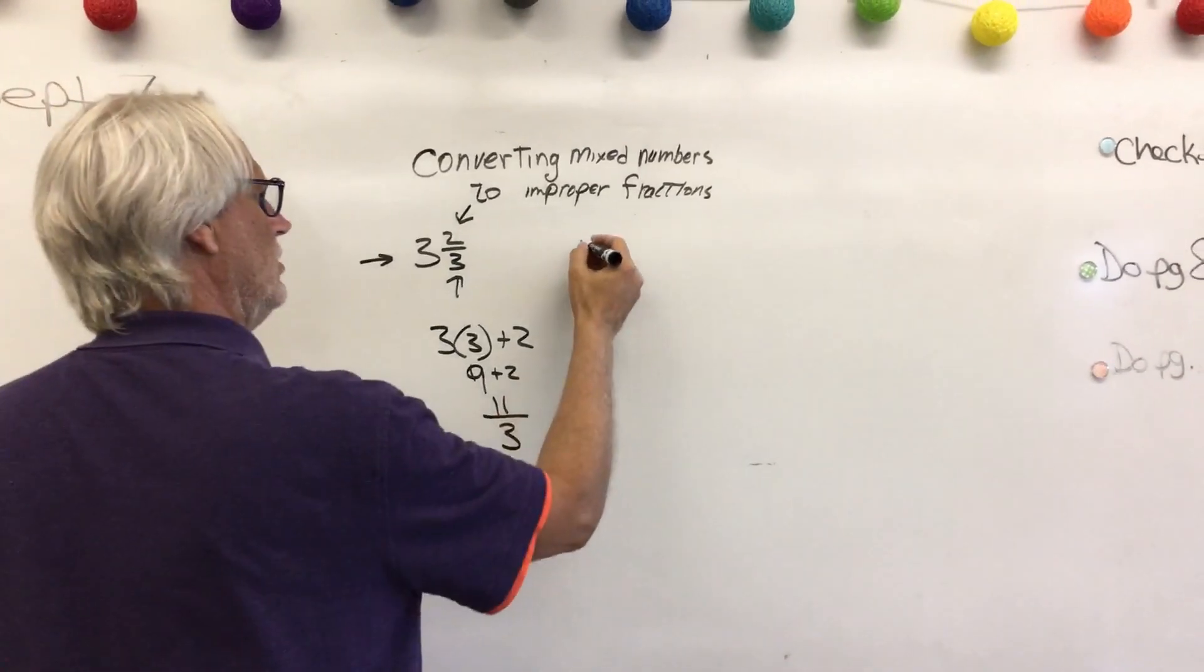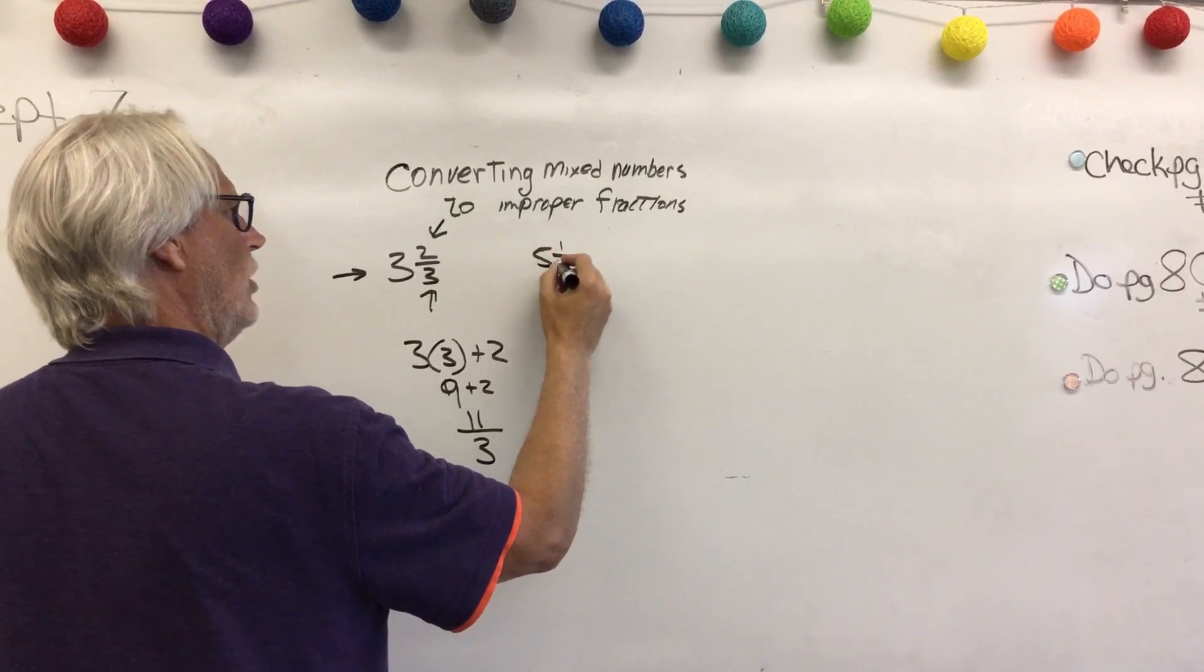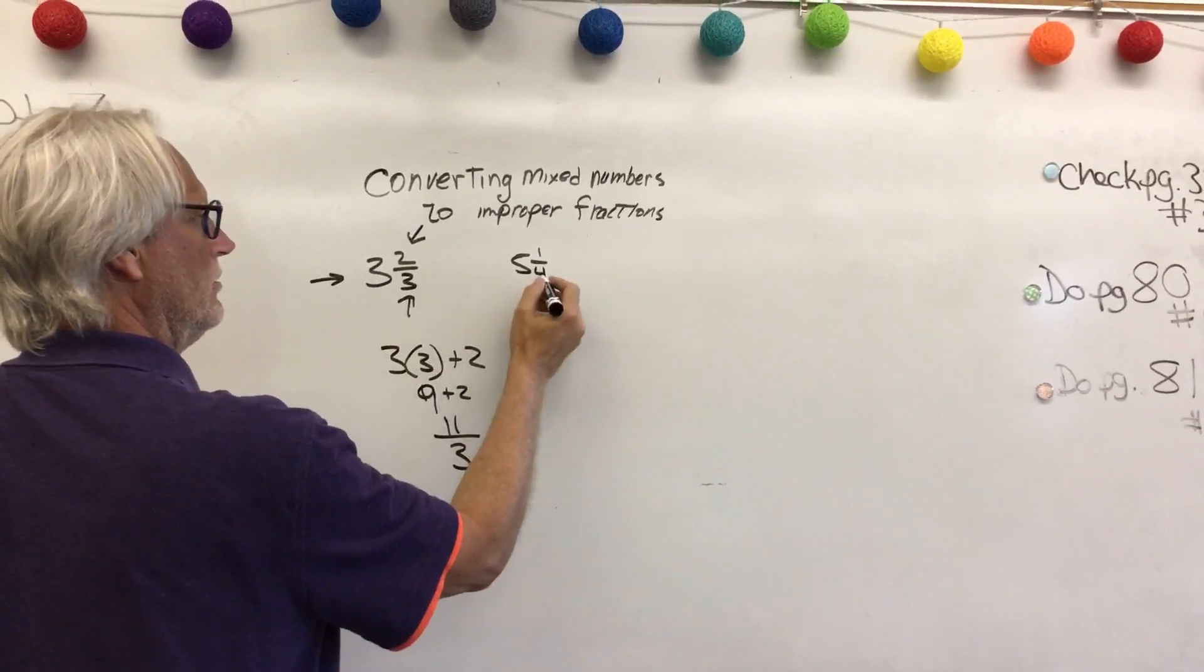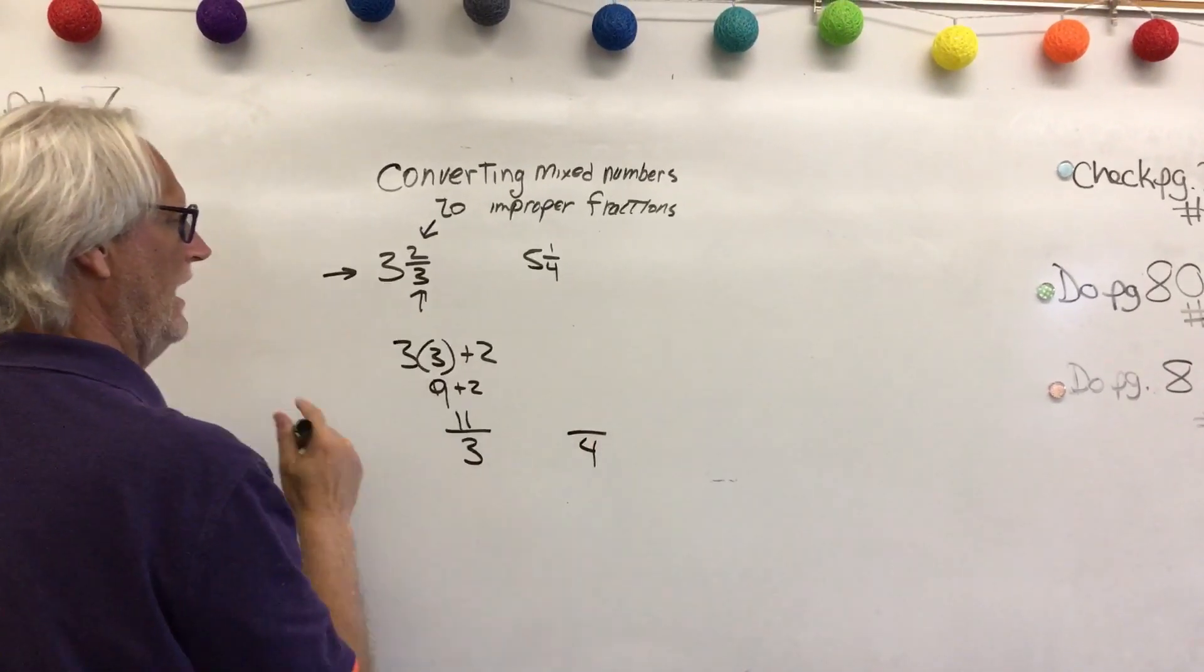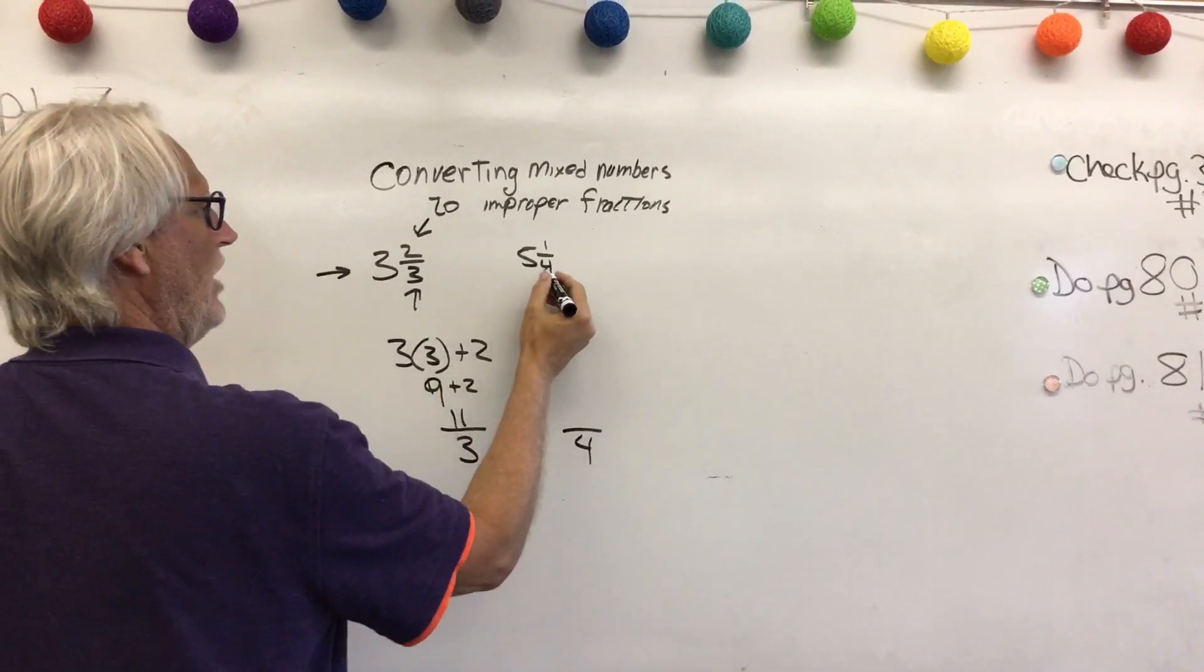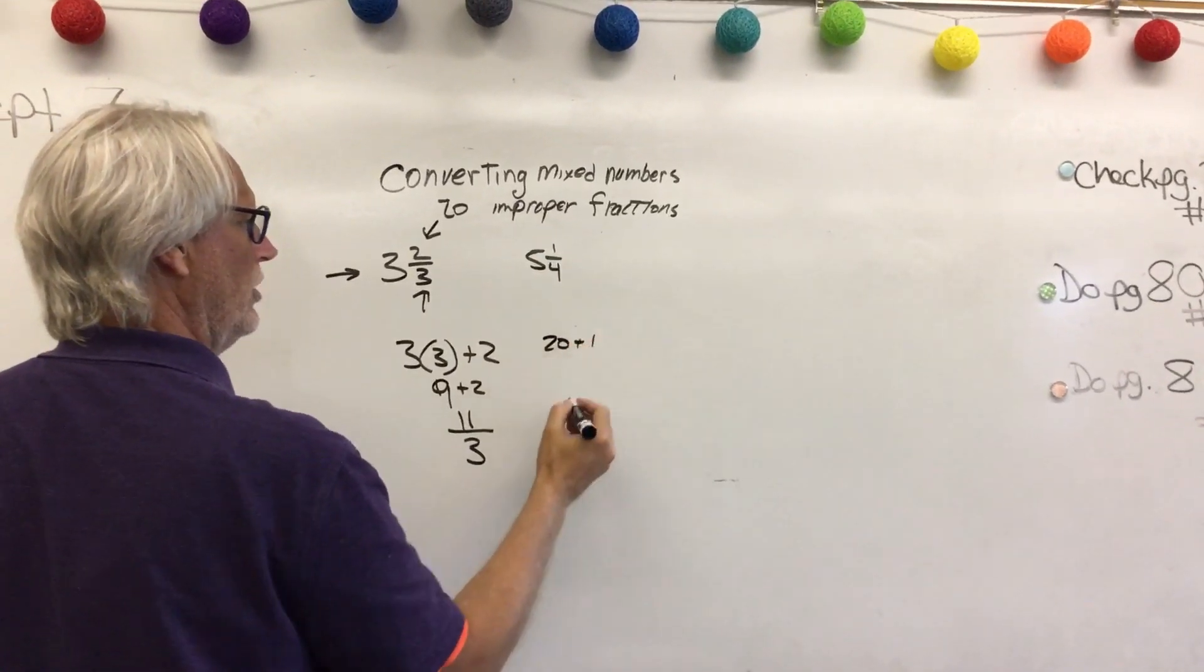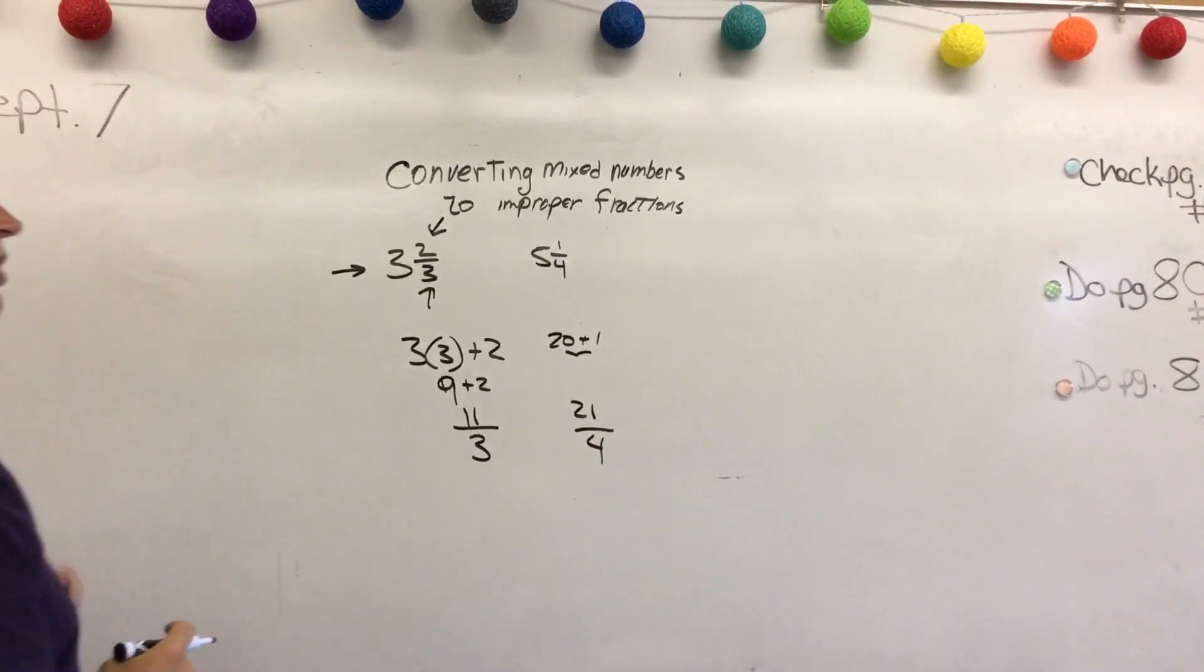So let's try another one, let's do 5 and 1 fourth. So whole number, denominator, I'm just going to make this my denominator so I don't forget. So 5 times 4, which is 20, plus 1, which is 21. So my numerator becomes 21 over 4.